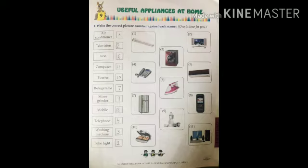Next one is telephone. Telephone and mobile are both different. In this picture telephone is number four, so write down four in front of telephone. Next one is washing machine — we use the washing machine to clean clothes, so write down number three in front of washing machine. Last one is a tube light — write down number one.